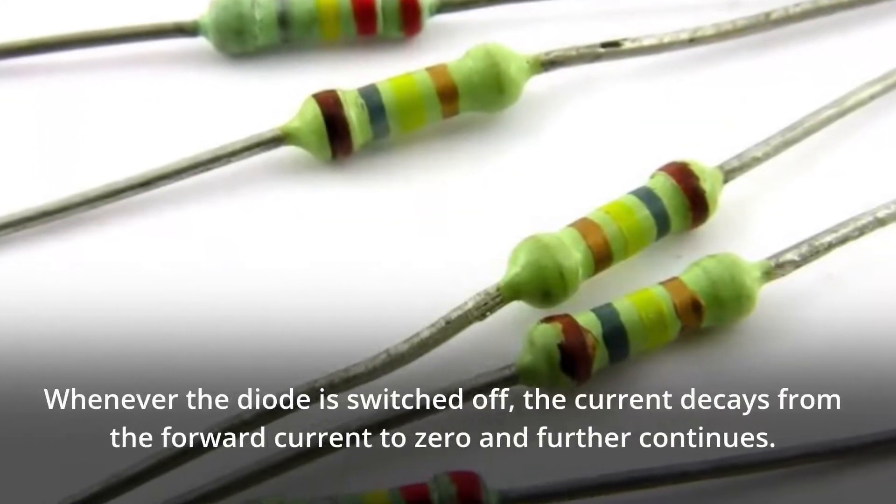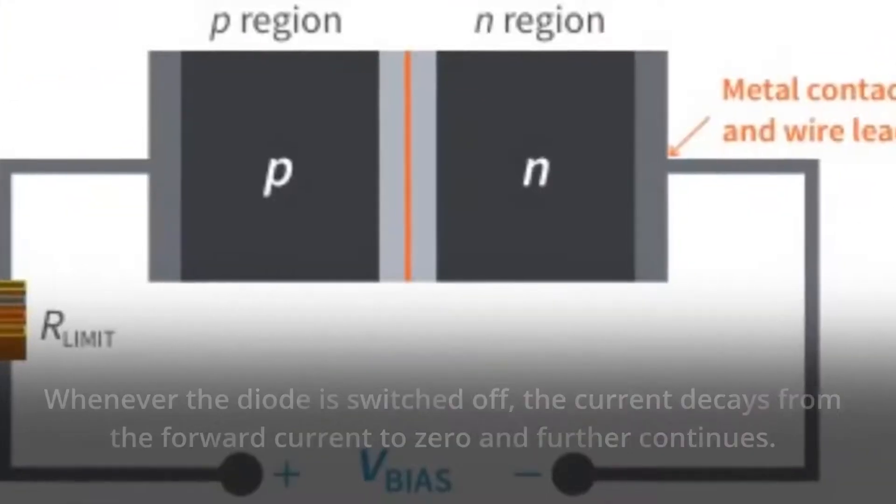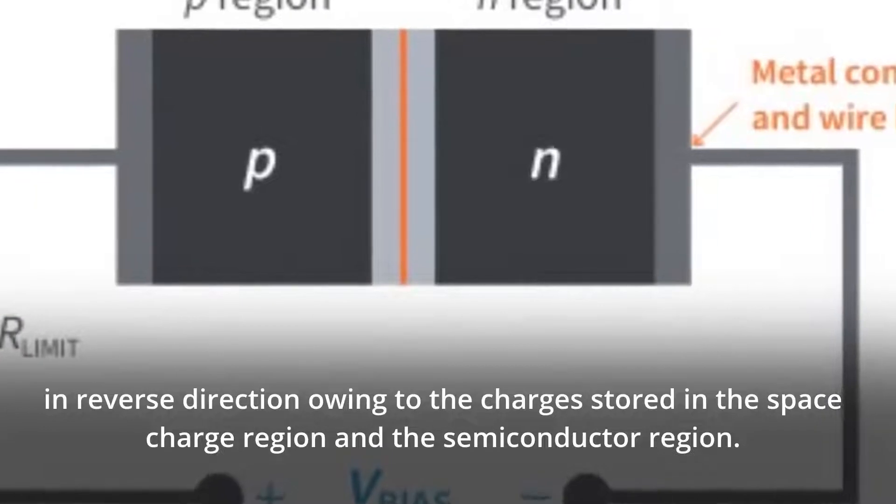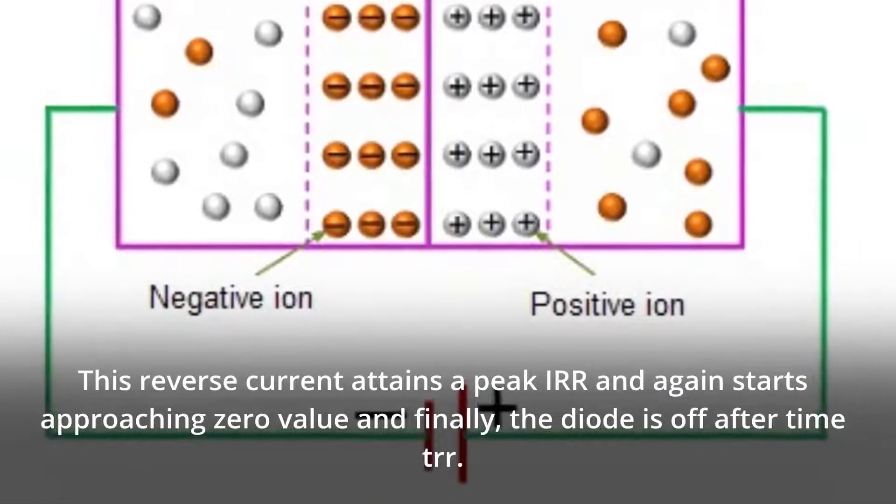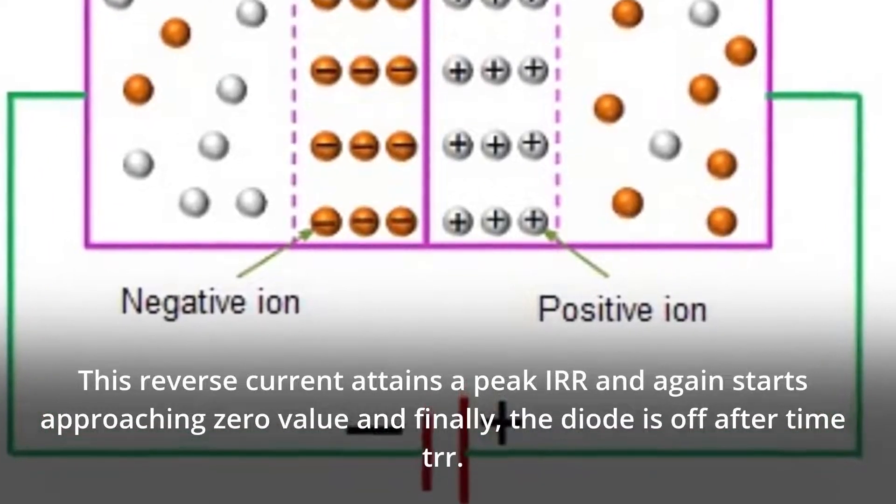Whenever the diode is switched off, the current decays from the forward current to zero and further continues in reverse direction owing to the charges stored in the space charge region and the semiconductor region. This reverse current attains a peak IRRM, again starts approaching zero value and finally, the diode is off after time TRR.